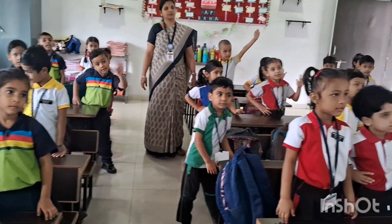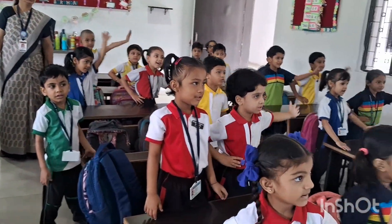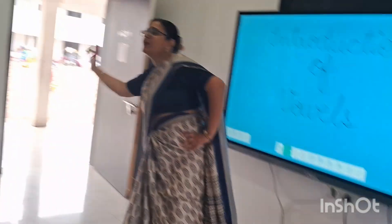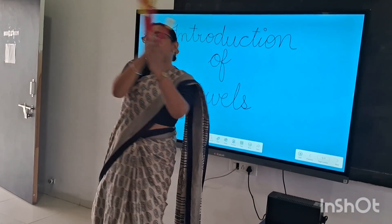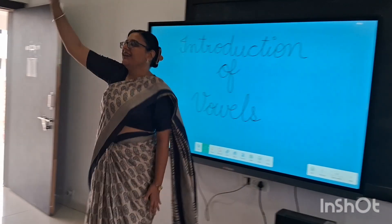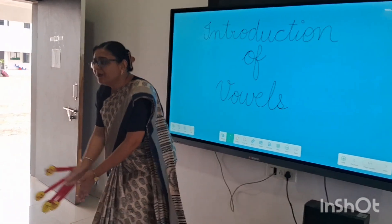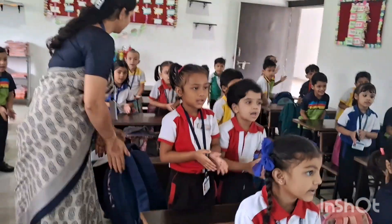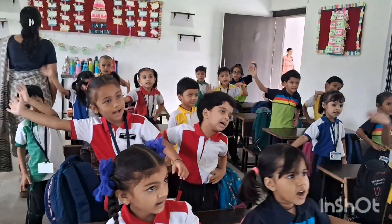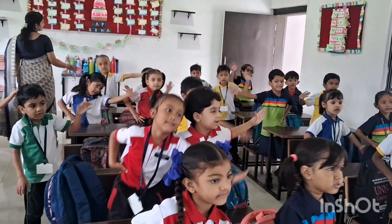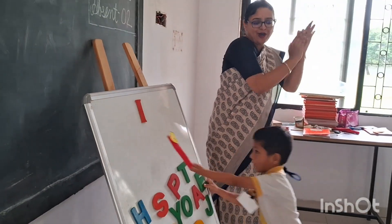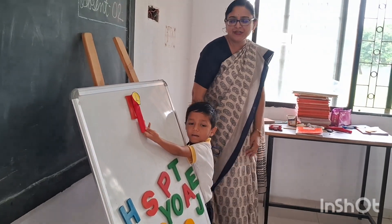Ready, steady, go! There are five vowels in English: A-E-I-O-U. We start our vowel raya.